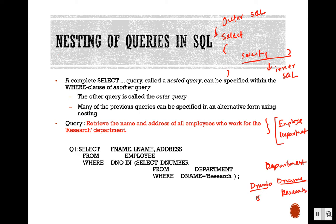We can find the dnumber where dname equals 'research'. That gives us the dnumber where dname equals 'research'. Then we can write another query to find the name and address of all employees where the employee attribute dno equals five — five being the dnumber where dname equals 'research'.